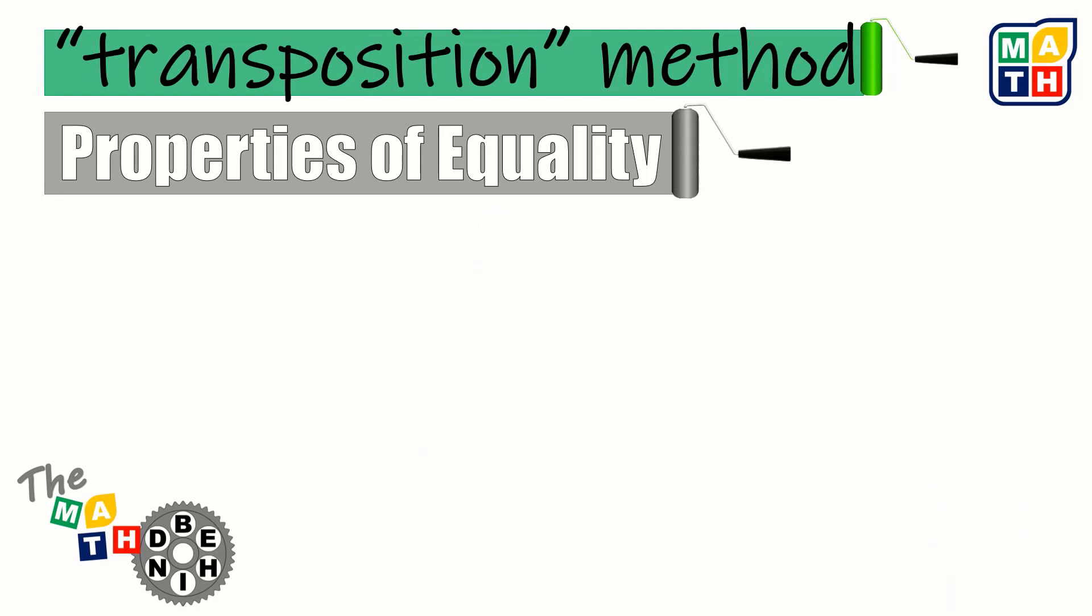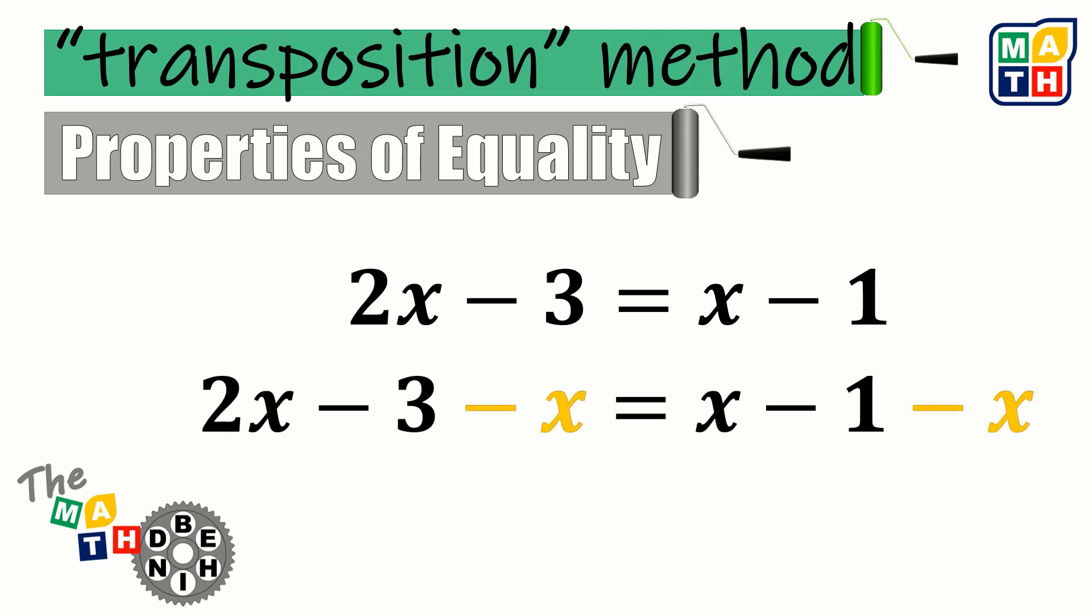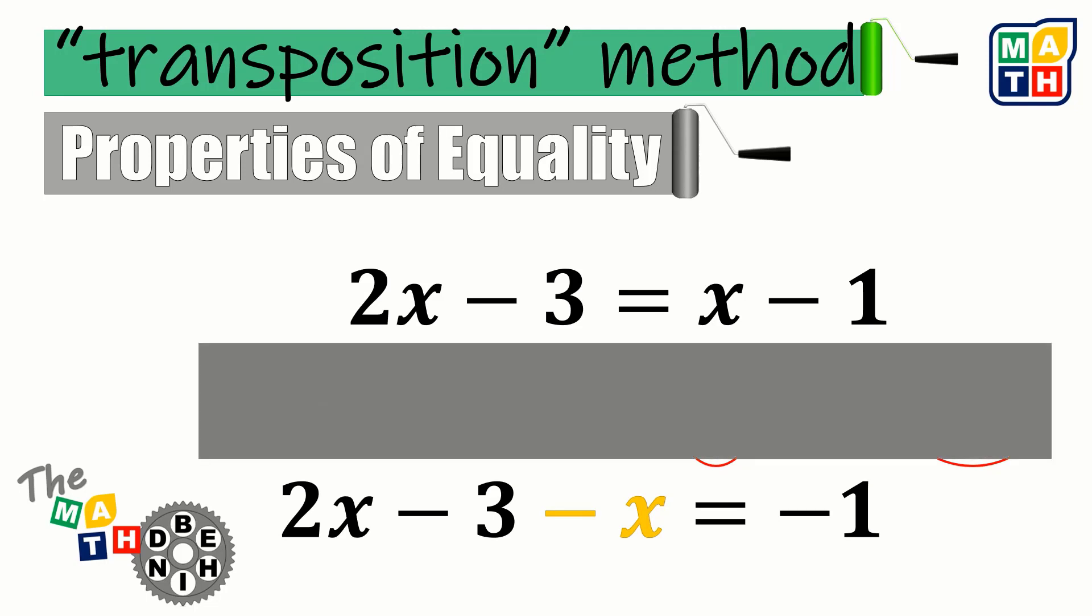The similar concept is also what looks like to happen for x. As we subtract x on both sides, we can assume that we can simplify the x's on the right-hand side of the equation. If we are going to cover the second part, we could see that it looks like the positive x was just transformed into a negative x, after moving the said variable into the other side of the equation.